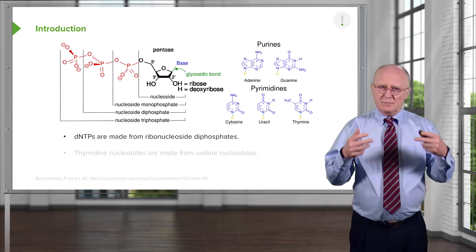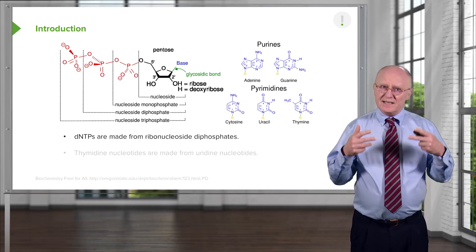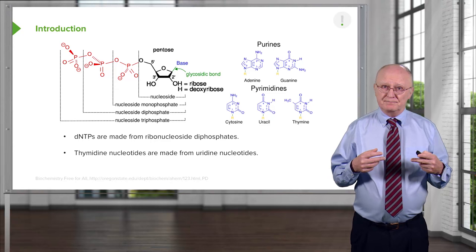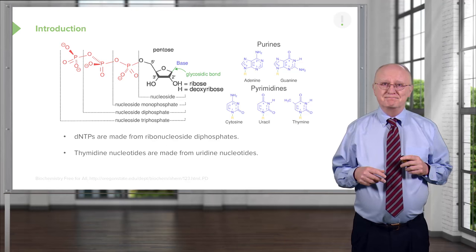The deoxyribonucleotides used to make DNA are made from ribonucleoside diphosphates. So in order to make dNTPs, we first need to make the ribonucleotide versions of those. Thymidine nucleotides are made from uridine nucleotides, so in order to make thymine to put into DNA, we first have to make the uridine equivalent.